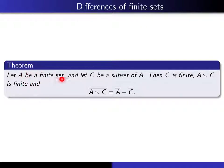Now let's talk about set-theoretic differences of finite sets. Give yourself a finite set A and a subset C of it. That subset is finite, as we just observed. The set-theoretic difference A minus C is also finite, because it's a subset of A. And the cardinality of A minus C equals the difference of the two cardinalities — if you take away some elements, the cardinality of what remains is |A| minus |C|. That's intuitively obvious, but it is a genuine theorem with something to prove.